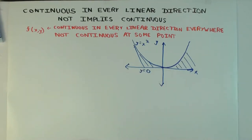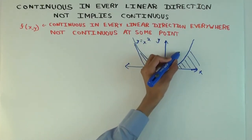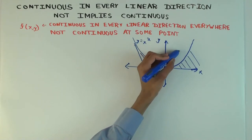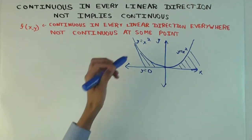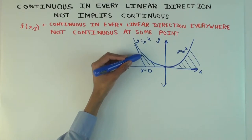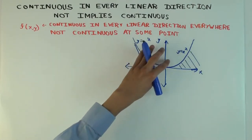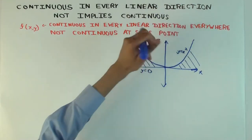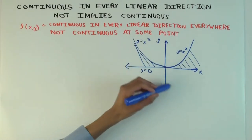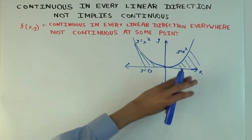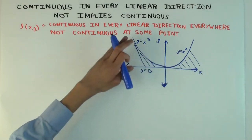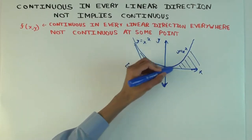The idea is illustrated in this picture. This is meant to be the parabola y equals x squared — it should actually be symmetric about the y-axis. There's a region between y equals zero and y equals x squared. The function I'm going to define will be zero everywhere above the parabola, and it's also going to be zero everywhere below the x-axis. So it's going to be non-zero only in this shaded region.